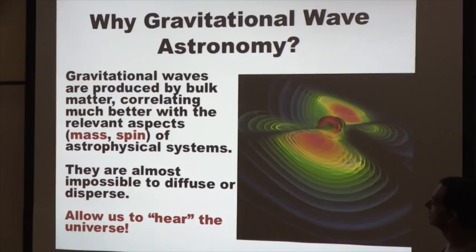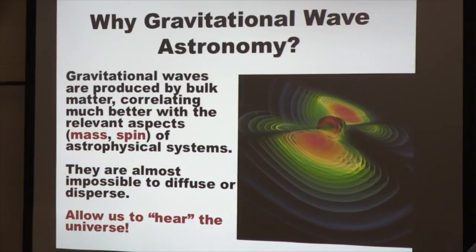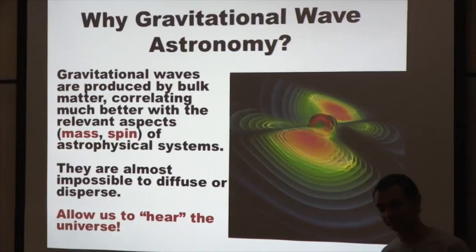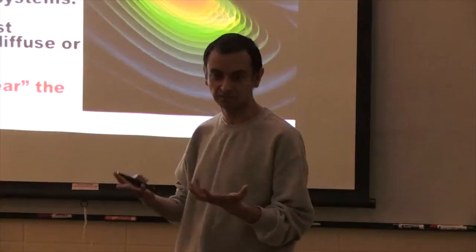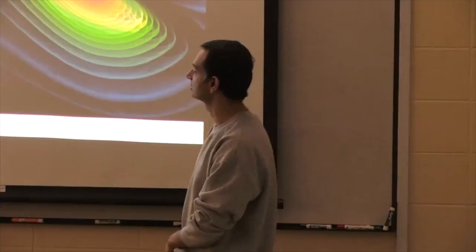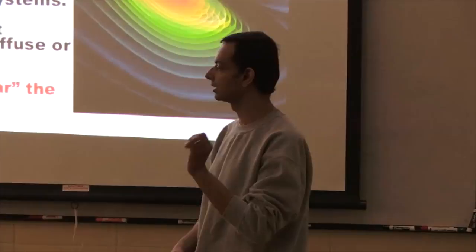The second reason, perhaps even more important, is that these waves are almost impossible to slow down, stop, or absorb. They can go through miles of lead and not be affected. They can go through a whole star and not be affected. These things can travel for billions of light-years completely unaffected, making them invaluable as an astronomical tool. The reason is that gravitational waves interact weakly with matter.